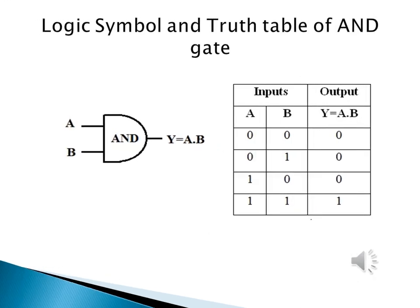We can see the logic symbol and truth table of the AND gate. The symbol shows two inputs, A and B, and the output Y equals A dot B. In the truth table, if both inputs are low, the output is also low. If one input is zero and the other is one, the output will also be zero. When both inputs are high, we have a high output.